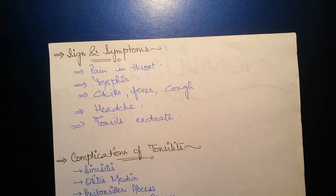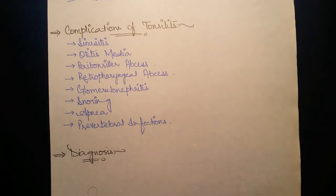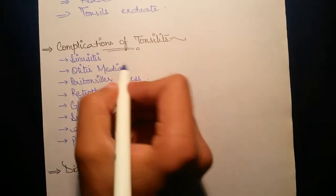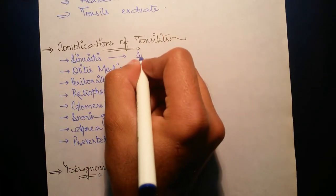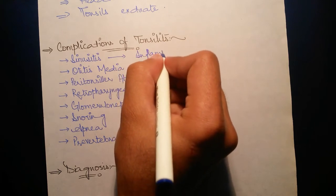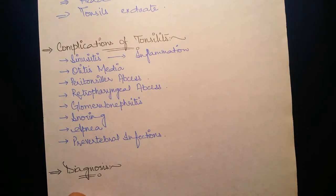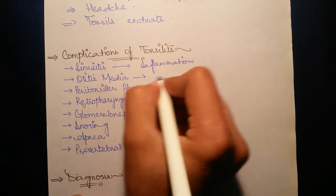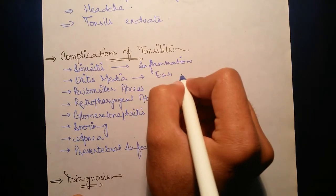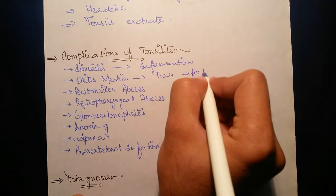Now it's time for complications of tonsillitis. There are different conditions in which the tonsillitis may become complicated, like sinusitis, which is the inflammation of sinus, due to which there is a snoring effect or a person cannot breathe properly. Otitis media is the ear infection which is mostly caused in tonsillitis.